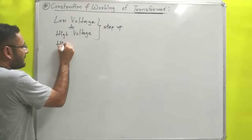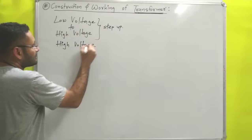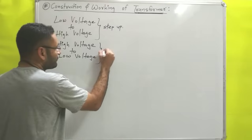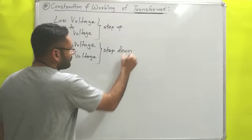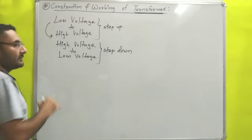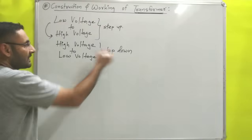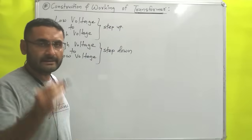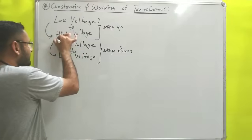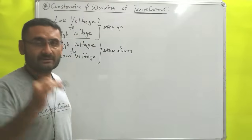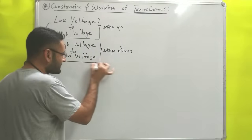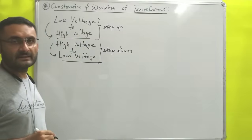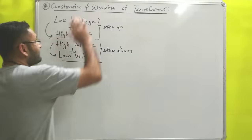Similarly, if you have a high voltage and want to decrease it to a low voltage, you will use a transformer known as a step down transformer. Step up transformer will increase the voltage or potential or EMF. Step down transformer will decrease the voltage or potential or EMF. Step up transformers are located near the power station where voltage is increased, and step down transformers are located in our society near our house where voltage is decreased and supplied to our house.